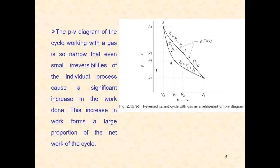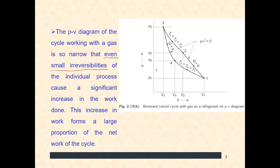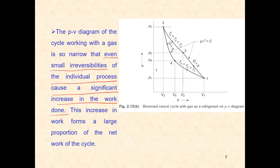From the PV diagram, there can be large irreversibilities during these processes. We are considering them to be reversible processes, but in actual practice, there will be irreversibilities, and even if there are very small irreversibilities in the individual processes, it may cause a significant increase in the work required. Any irreversibility in the process will cause the work transfer required in the system to increase a lot. That is the reason we cannot use a reversed Carnot cycle in a refrigeration system with gas as a refrigerant.